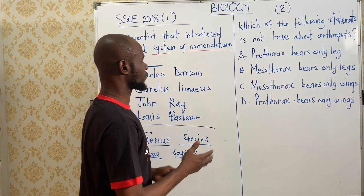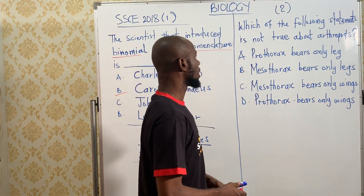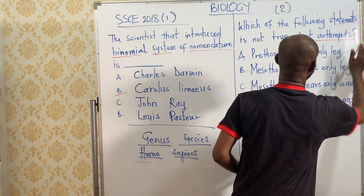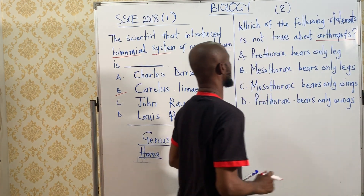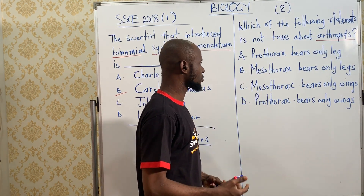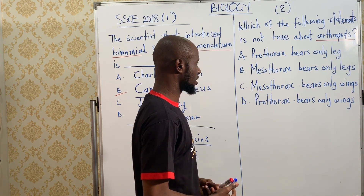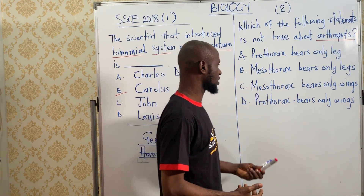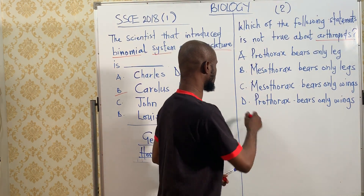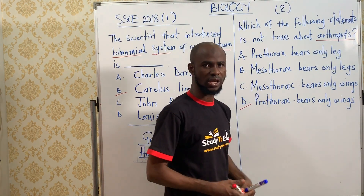Now let's go to the second question: which of the following statements is not true about arthropods? The options are: prothorax bears only legs, mesothorax bears only legs, mesothorax bears only wings, and prothorax bears only wings. The answer is: the prothorax bears only wings.